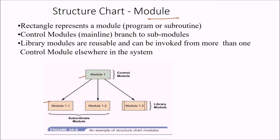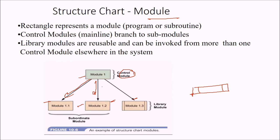Control modules form the main line and branch to sub-modules. Library modules are reusable and can be invoked from more than one control module elsewhere in the system. The modules are numbered — for example, 1, 1.1, 1.2, and 1.3.